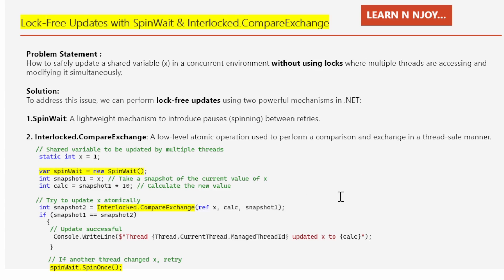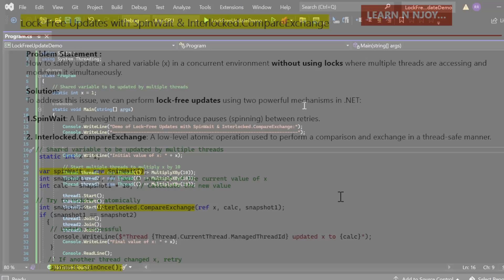With this code snippet I wanted to show how to safely update a shared variable in a multi-threaded environment using lock-free techniques. I have used Interlocked.CompareExchange to ensure the update happens atomically without a lock, and it retries the update using SpinWait if another thread modifies X before the update completes. This mechanism prevents race conditions where different threads could potentially override each other's changes. Let's switch to Visual Studio and see all these things in action.